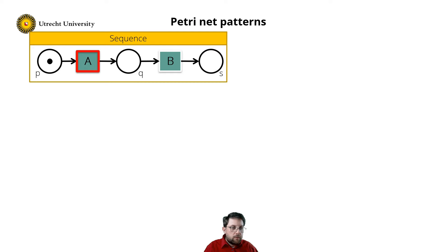As a first pattern, consider the sequence as shown on my left. In this net, transition A is always followed by transition B. In the labelled transition system, this is visible by the two transitions that always occur one after the other. So in any state reached by transition A, you will see an outgoing transition B.